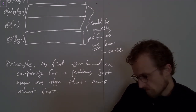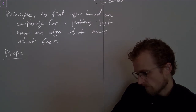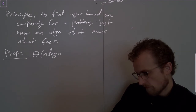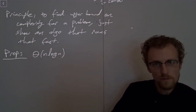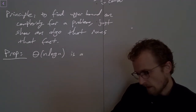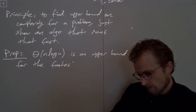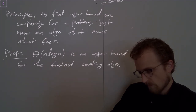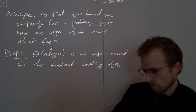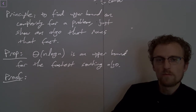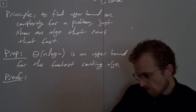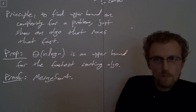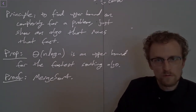Here's a proposition — a true proposition: big theta of n log n is an upper bound for the time complexity of sorting, or for the fastest possible algorithm that sorts n numbers. N log n is an upper bound for the fastest sorting algorithm. This is something I can prove to be true. What's my proof? I have an algorithm that sorts in n log n time — that's it. My proof is that merge sort is this fast. Technically speaking, the proof is the proof that merge sort sorts in n log n time.